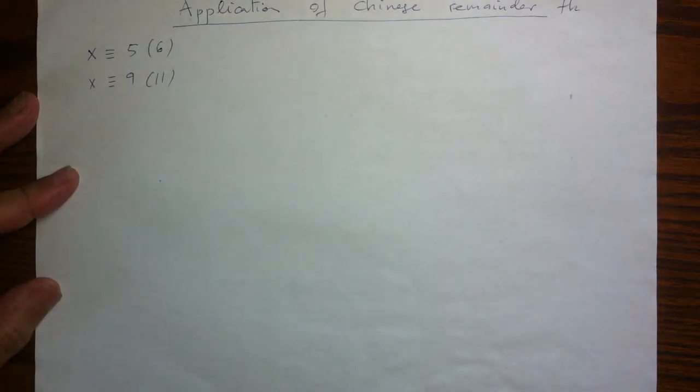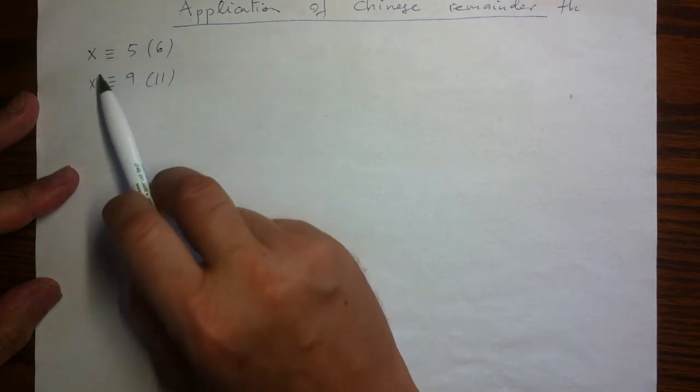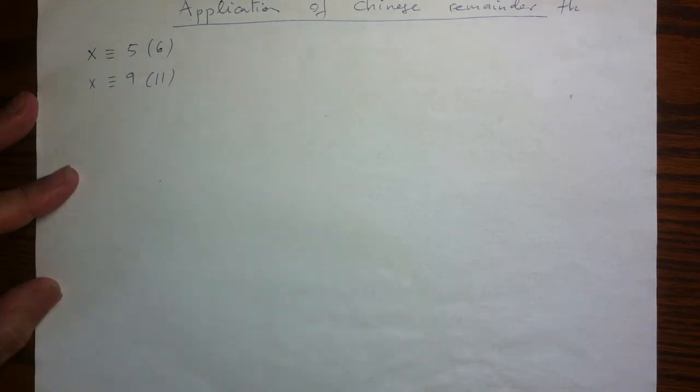And the task is just a straightforward application of Chinese Remainder Theorem to find a number x which gives these congruence classes. So we know that it's going to be unique modulo 66, but let's just find some.